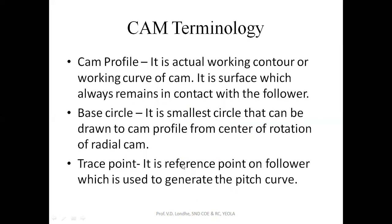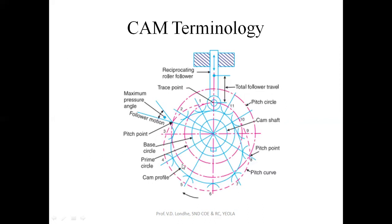The next is the trace point. The trace point for the roller follower will be the center of the roller. For the knife-face follower, the knife face will be in contact with the base circle, so the trace point for the knife-face follower is at that contact point, and the trace point for the roller follower will be the center of the roller.